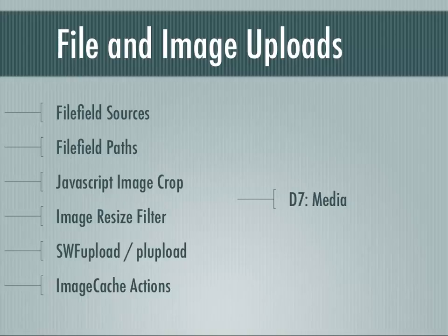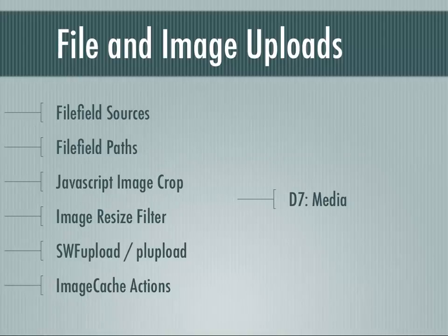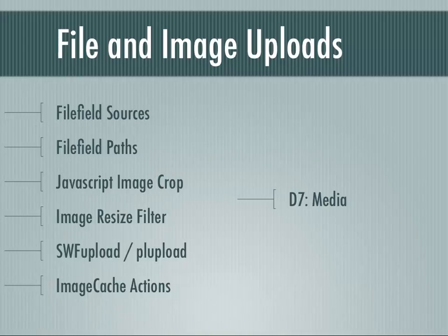Image Cache Actions is an Image Cache module that provides additional abilities not built into Image Cache normally — like being able to adjust the brightness or contrast of your derivative image. A use case: I wanted users to upload their avatar, and when presented on a user page, I wanted to auto-generate both the on and off mouseover states. I wanted the off state to be grayscale and a little brighter so that when you roll over it, it highlights. You can use Image Cache Actions to generate all these different presets for generating different derivative images.